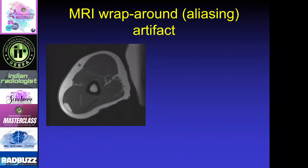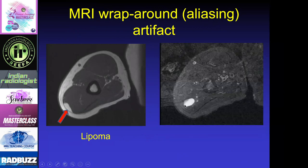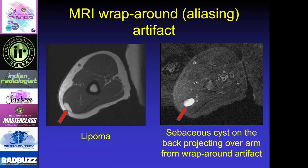Another MR artifact is the wraparound or aliasing artifact. In this case in the forearm, there's actually a fatty lesion — a lipoma — as the reason for the MRI study. However, on the T2-weighted image we see another lucency, and this doesn't make sense since it's really a lipoma. In fact, if you look carefully, here's the spine — there was actually a sebaceous cyst that was superimposed upon the arm, making it look like there was a different signal intensity than the lipoma.